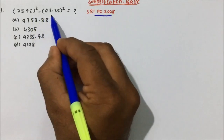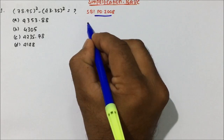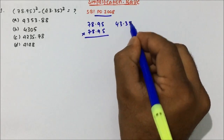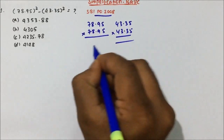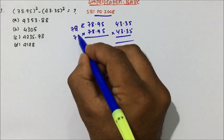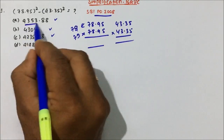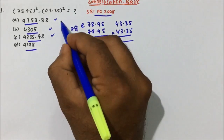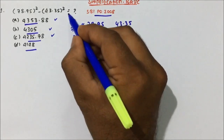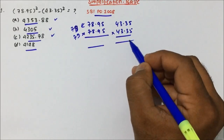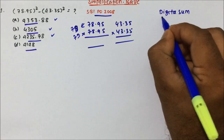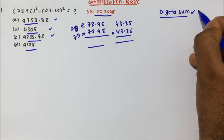78.95 squared minus 43.35 squared will be equal to what? Generally when a question is asked in the exam, we start multiplying. But multiplying this number is not easy. If you try to approximate 78.95 to 79 or 80, you will not get the correct answer because the options are very close to each other. So we cannot normally multiply and get the answer. For this, there is one concept called digital sum.